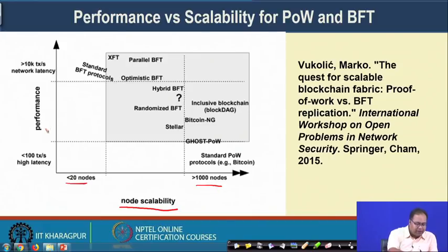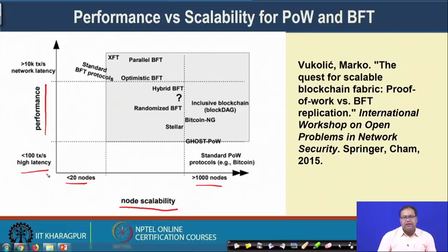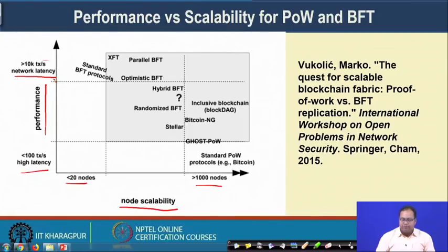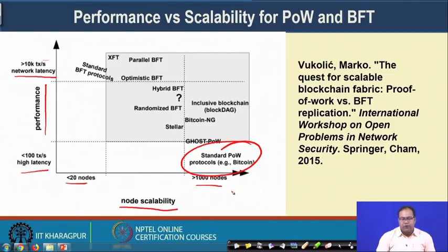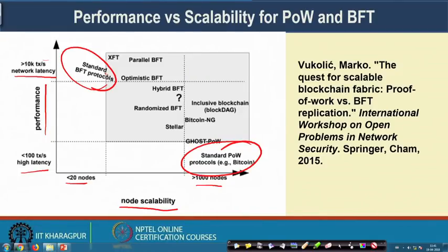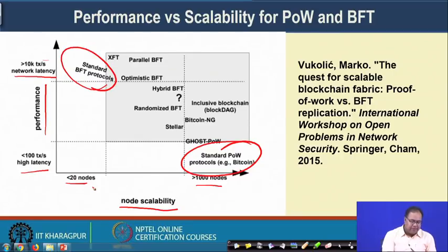The Y-axis ranges from fewer than 100 transactions per second — where block commitment latency is very high — to around 10,000 transactions per second where network latency is the prime factor. Proof of Work protocols fall in the region of good node scalability but very low transactions per second. On the other hand, standard BFT protocols offer good transaction scalability — more than 10,000 TPS — but support only fewer than 20 nodes.